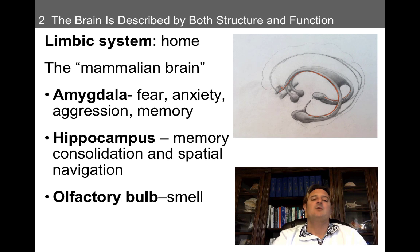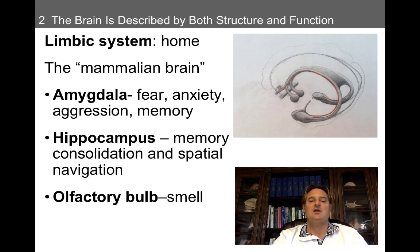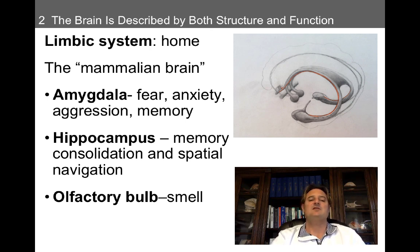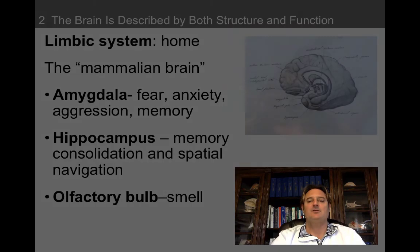The hippocampus, one of the best-studied structures in the brain, plays a very important role in memory consolidation, especially in spatial navigation. In Alzheimer's disease, the hippocampi are impacted preferentially in the initial stages — one of the behaviors commonly found is getting lost, because as the hippocampi atrophy, the ability to navigate through space is hampered by poor memory and poor spatial navigation. The olfactory bulbs, important for smell, are also part of the limbic system.